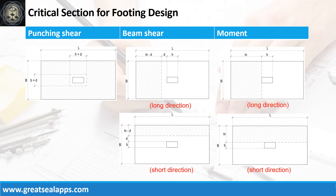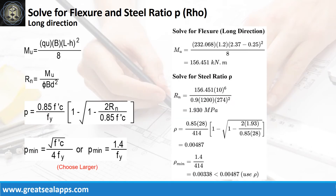Critical section diagrams for punching shear, beam shear, and moment evaluations. At long direction: given ultimate soil pressure equals 232.068 kPa, footing width equals 1.2 meters, footing length equals 2.37 meters, and column side equals 250 mm.